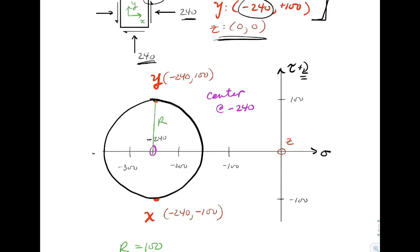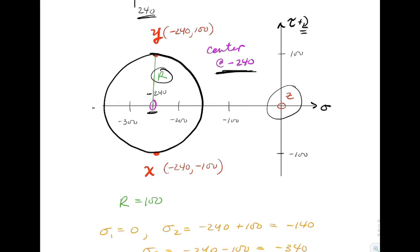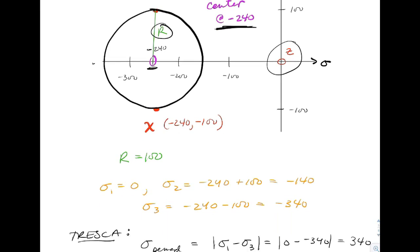When we plot those two points, and the z point still, the center of the xy circle, the in-plane, is going to be at minus 240. Previous problem it was at minus 200. The radius is still going to be equal to 100.